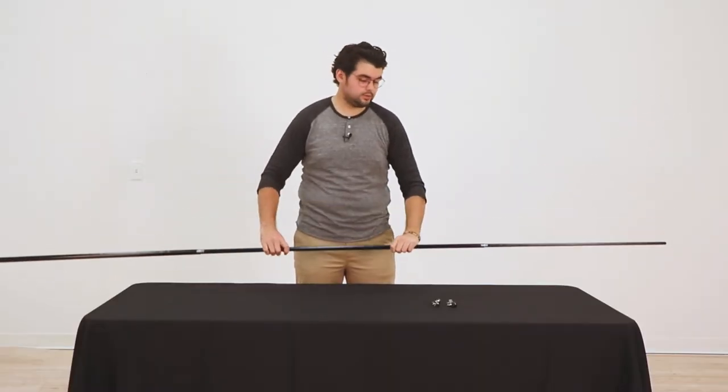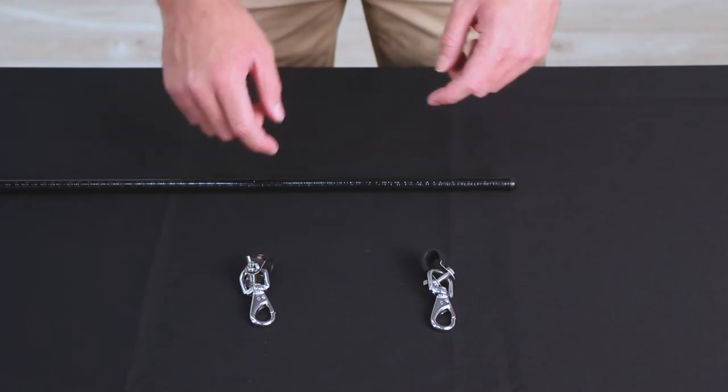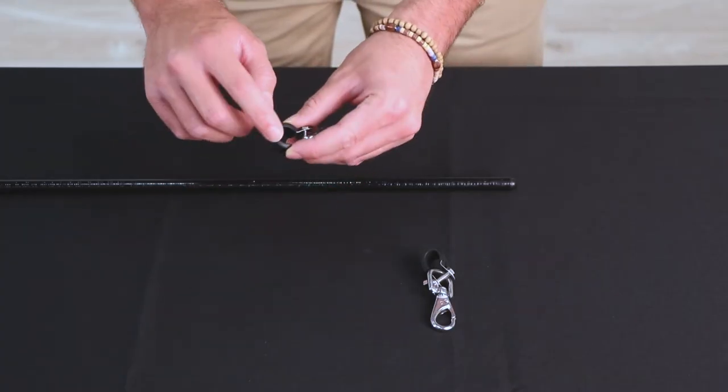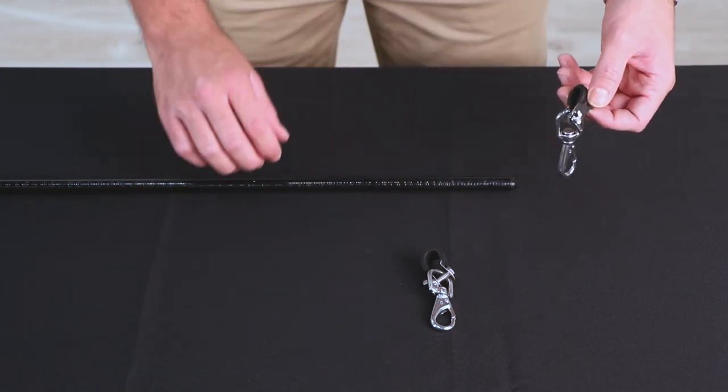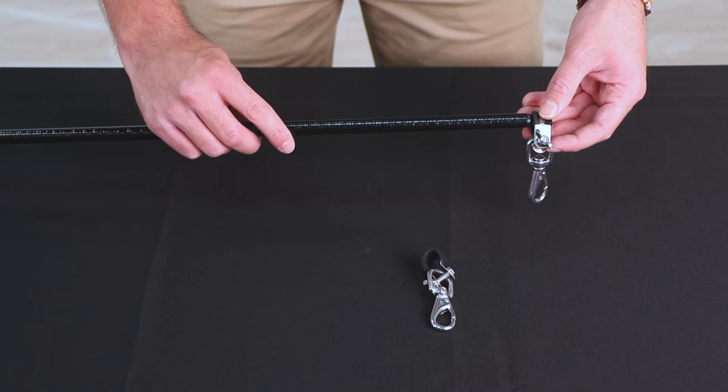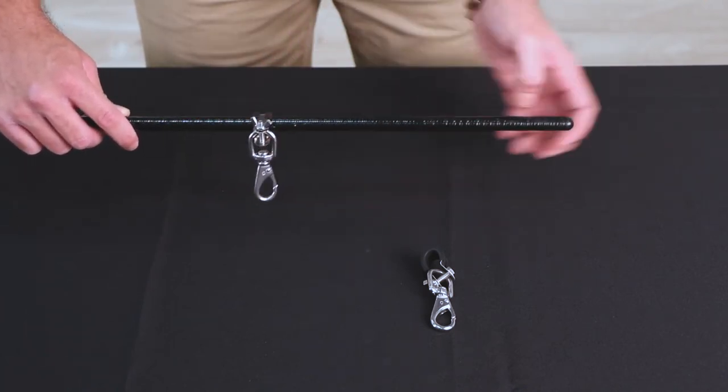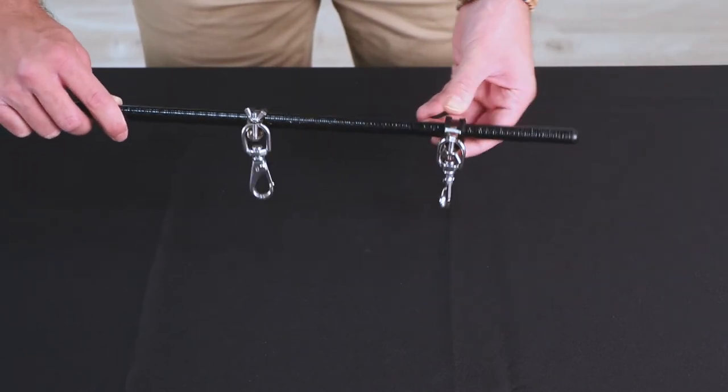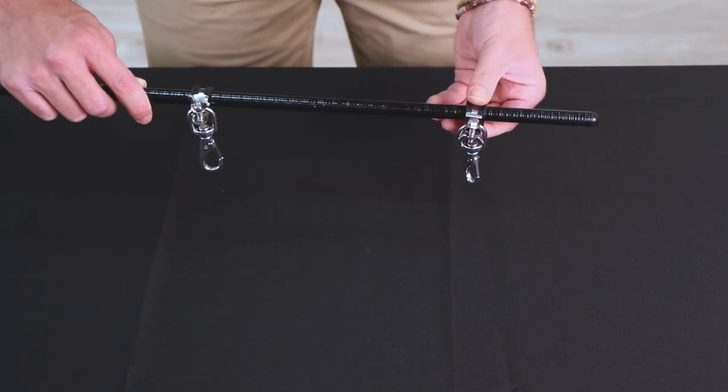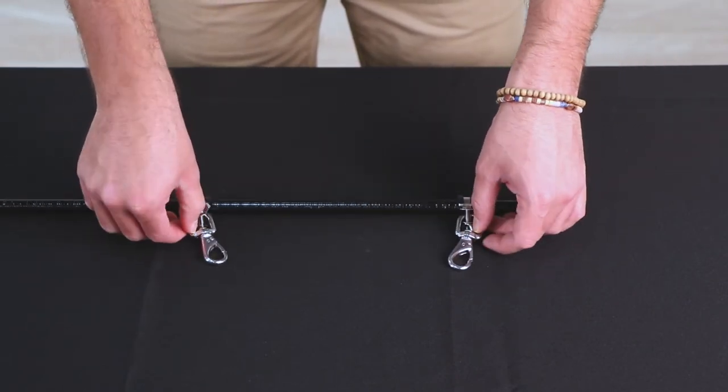Once your flagpole is assembled, you can now go ahead and attach the Insta-Flagpole clips. Simply identify the rubber end on the bracket on the flag clip and slide the top end of the pole through that bracket like so. Slide it down. Do the exact same thing for your second clip, and adjust the distance between the clips so you can attach your flag to your pole.